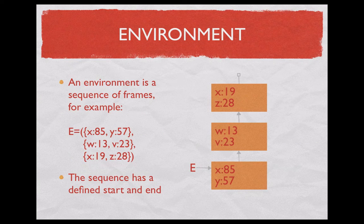An environment is a sequence of frames, that is an ordered set of frames connected to each other. So one of them will be first, and one of them will be last, and there will be frames in between them in a particular order. For example, the environment E in this figure has three frames. In the first frame x is bound to 85. In the final frame x is bound to 19.